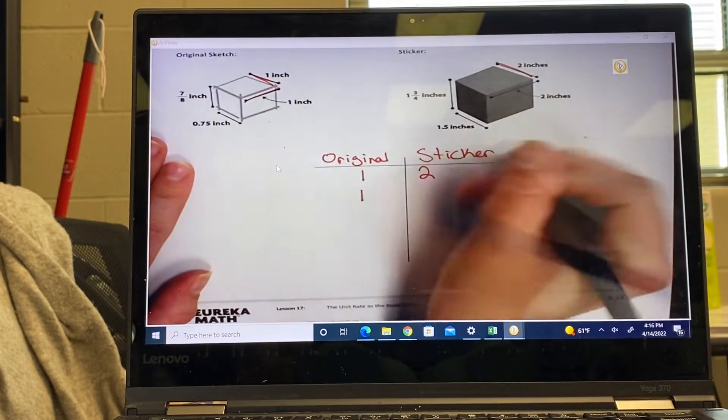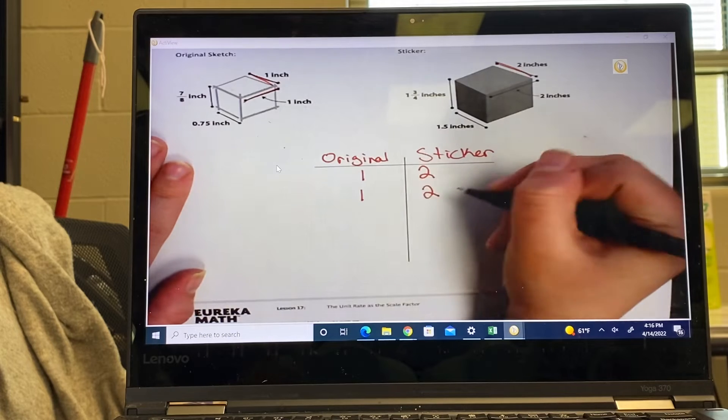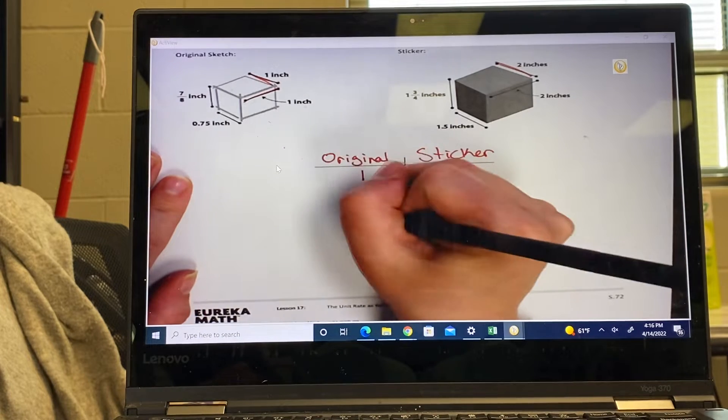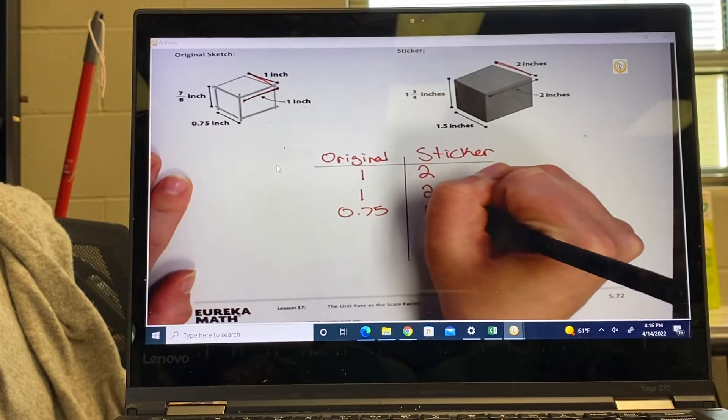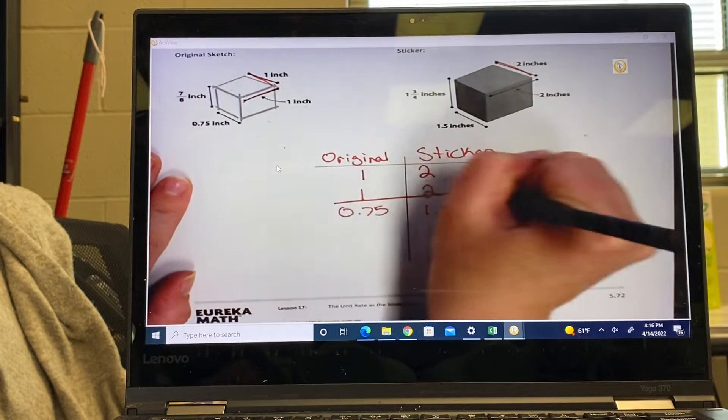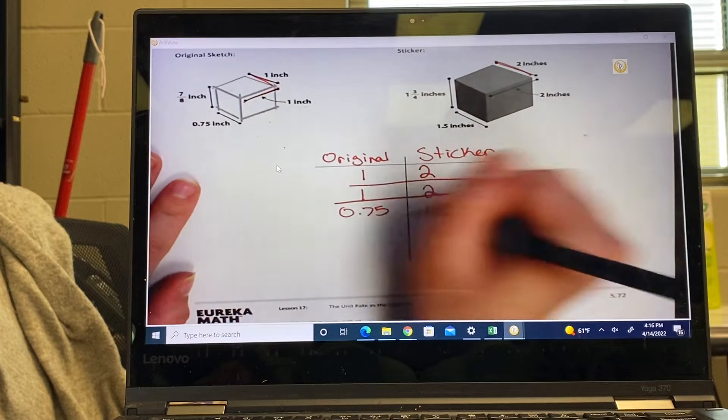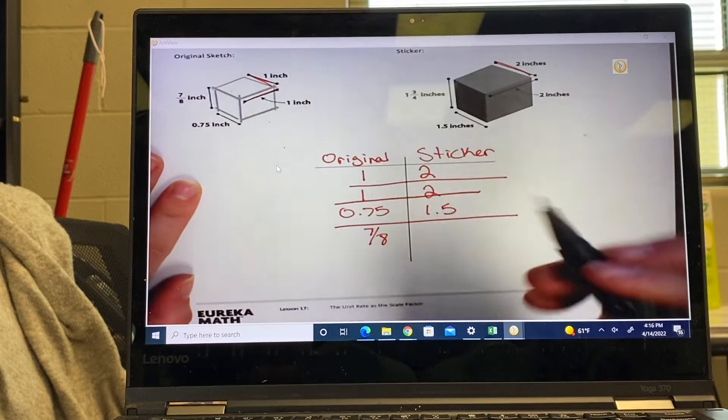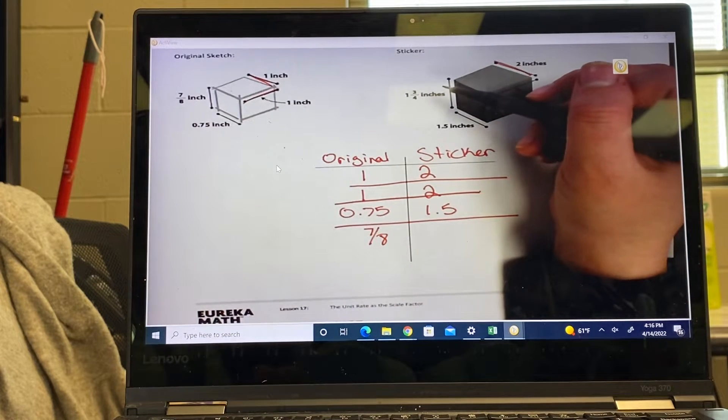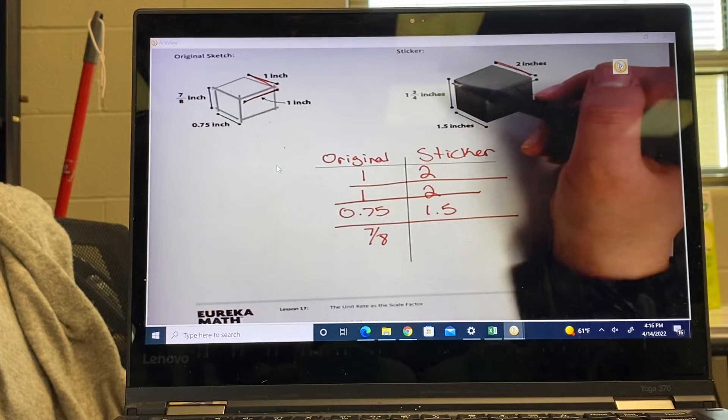And then the 0.75 goes to 1.5. You know, if you want to line up by using lines that could help you. Okay, because then we also have seven-eighths goes to one and three-fourths. To make this easier on ourselves, we want to make this into a mixed number.